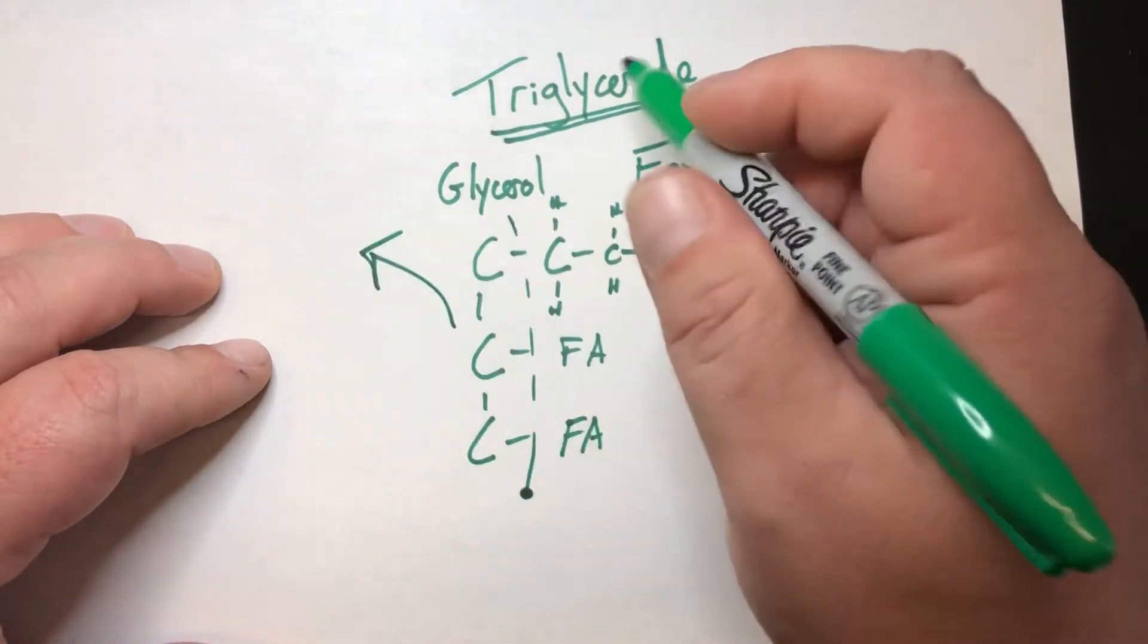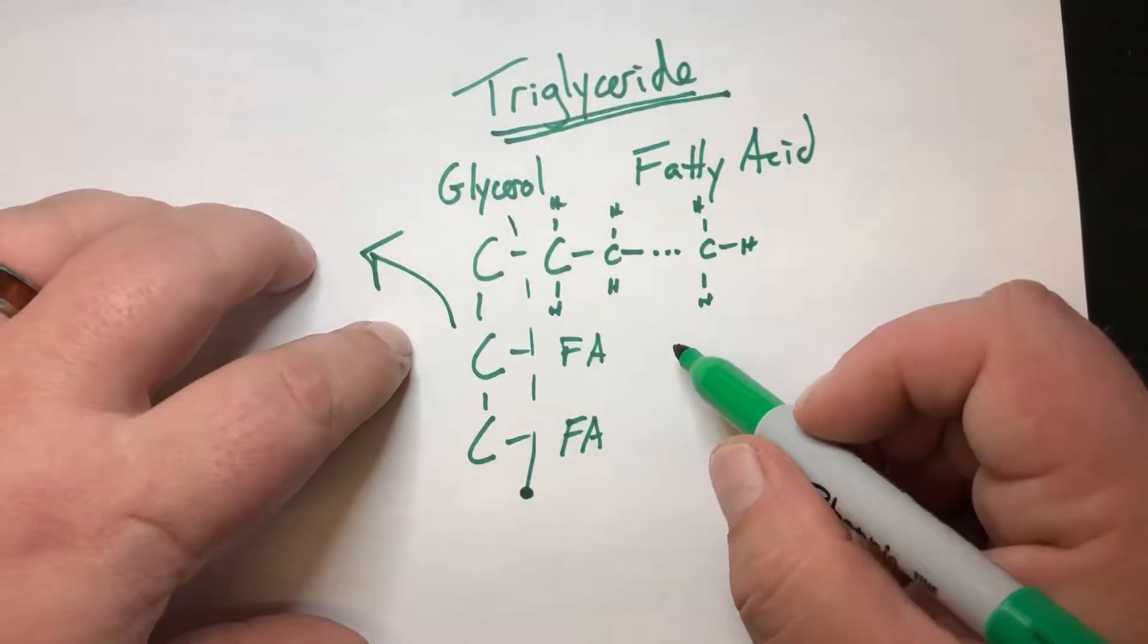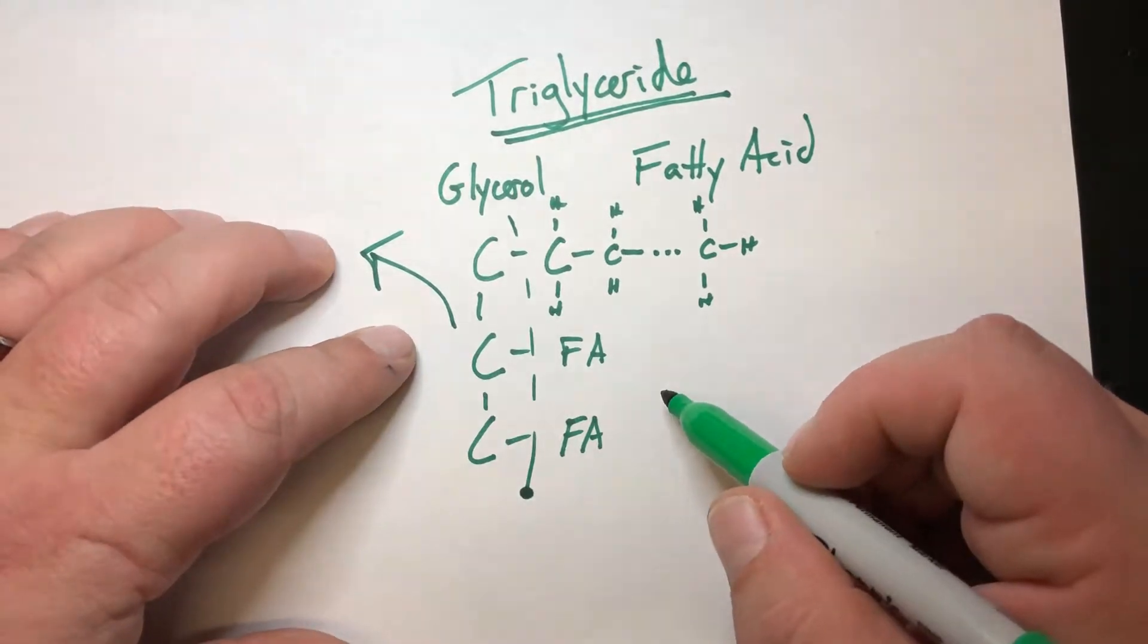That glycerol ends up going back and working its way into metabolism, and we'll point that out here in a minute, up at the level of the glucose and the pyruvates.